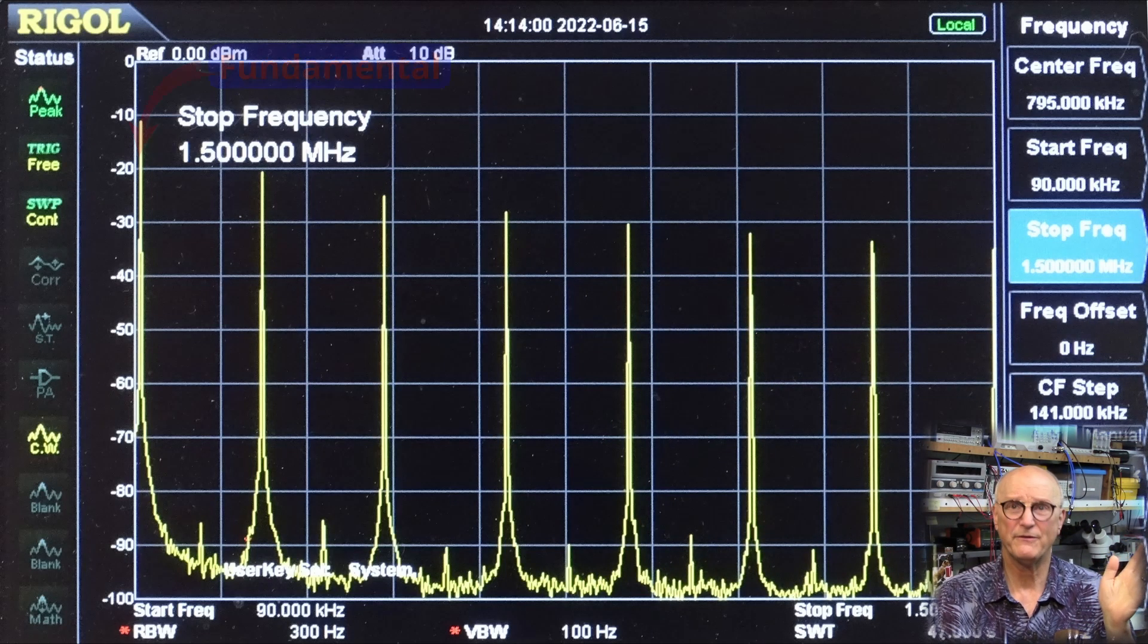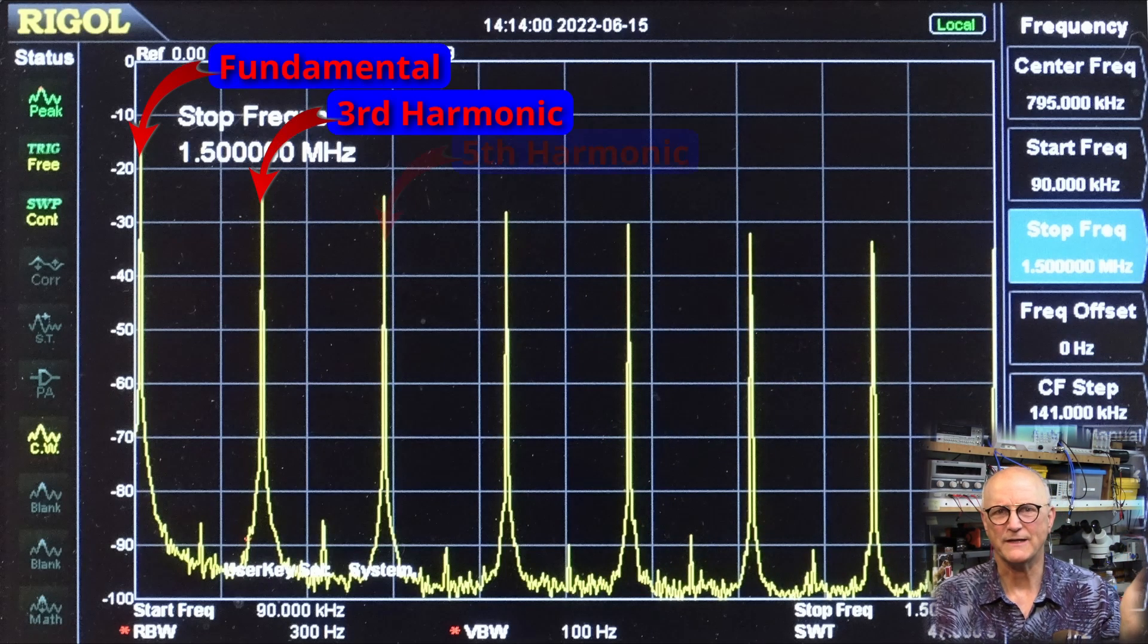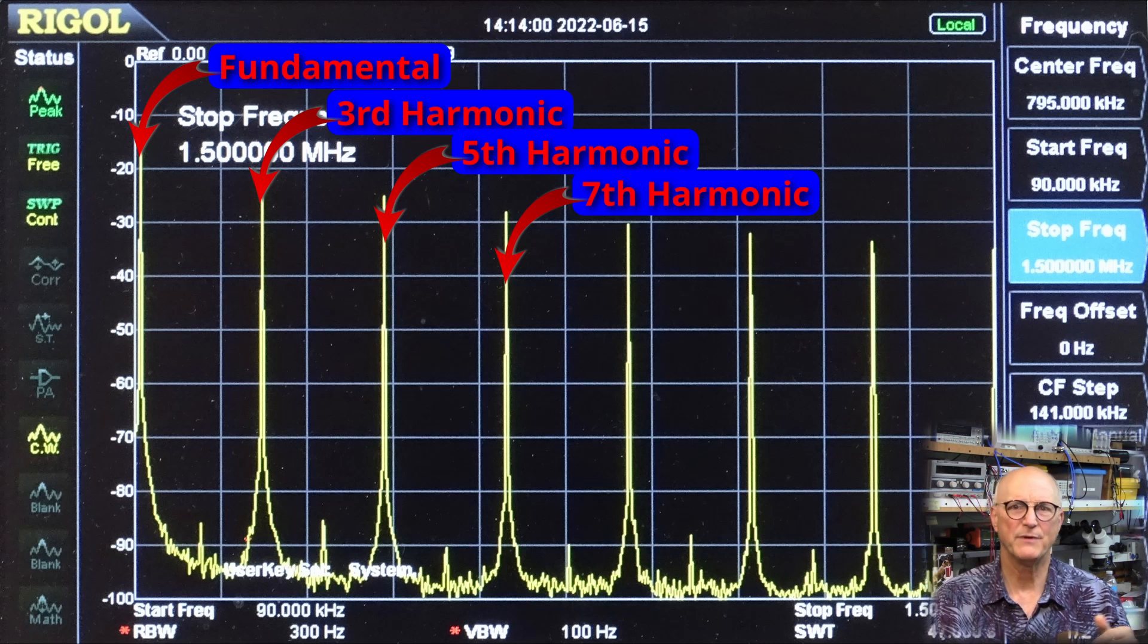As the trace of an oscilloscope travels from the left side of the screen to the right side of the screen, it is displaying the voltage of a signal as time progresses. As the trace of the spectrum analyzer moves from the left side of the screen to the right side of the screen, it is moving from a lower frequency to a higher frequency and showing the amplitude of the signal at the various frequencies that make up the signal. In our case of a square wave, we would see something like this: the vertical axis is in dB as opposed to volts, and the horizontal axis is frequency as opposed to time.